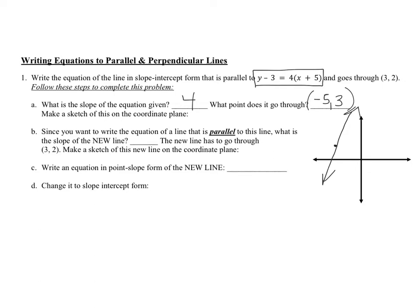Since the question asks for a line parallel to this, the slope of the new line must also be 4. It goes through the point (3, 2), not (negative 5, 3). Sketching: go right 3, up 2 — the new line is parallel, also with slope 4. The y-intercept of the new line is going to be negative, probably close to negative 10.